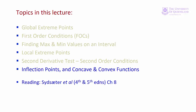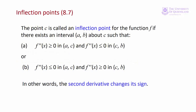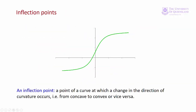So what is an inflection point? An inflection point is a point on a function where the second derivative changes sign. Say point C is an inflection point on some open interval AB. Either the second derivative is positive on AC and negative on CB, or the second derivative is negative on AC and positive on CB. In other words, an inflection point is where the function changes from being concave to convex or vice versa.